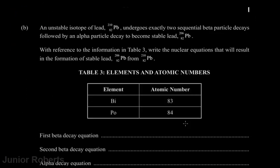The next question says: an unstable isotope of lead-210 undergoes exactly two sequential beta particle decays followed by an alpha particle decay to become stable lead-206. With reference to the information in table three, write the nuclear equations that will result in the formation of stable lead-206 from lead-210. We'll start with the first beta decay equation.